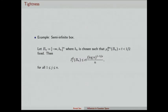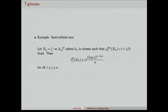The theorem is tight for the following sets. Consider the semi-infinite box of the form (-∞, b_n]^n. Choose b_n so that the Boltzmann measure of the set is some fixed constant t less than half. Then you will achieve the same bound as given in the theorem — so in general it cannot be improved.